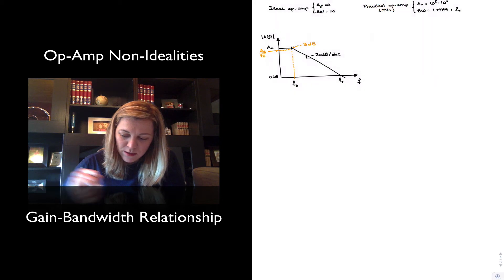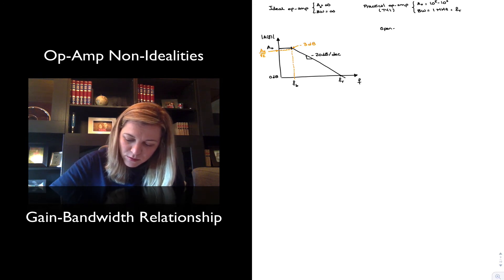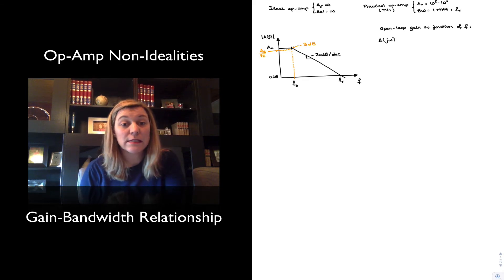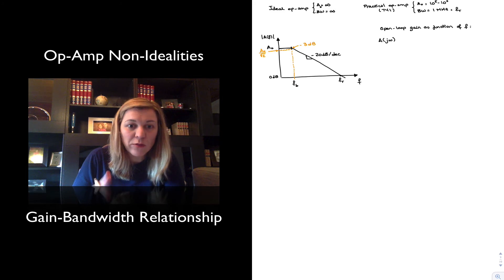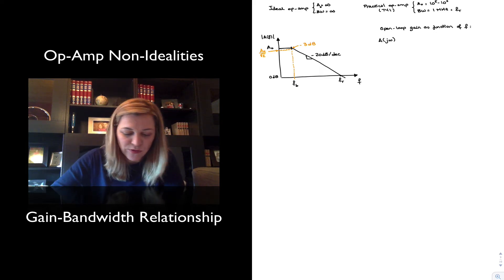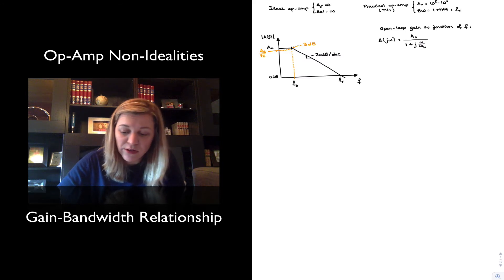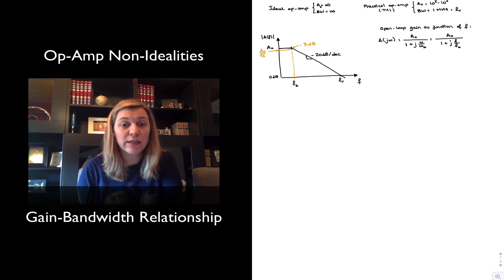If we wanted to express mathematically the open loop gain of the amplifier as a function of frequency, we will use the expression for a single pole low-pass filter, because that's essentially what this is. The system has multiple poles, but by placing the dominant pole at a low frequency, we ensure that at least until we reach F sub T, we have no interference from any other poles. The equation is: A sub 0 divided by (1 + j·omega / omega sub B), or equivalently A sub 0 divided by (1 + j·f / f sub B), since omega and f are related by a factor of 2 pi.